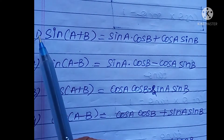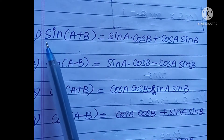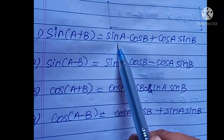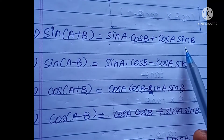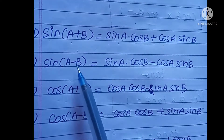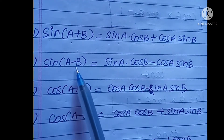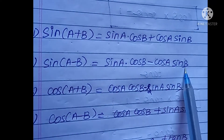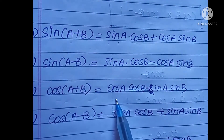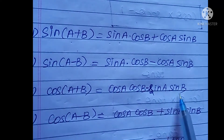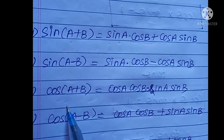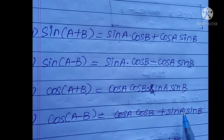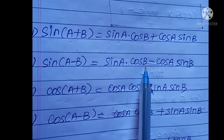Next, formulas important for exams: sin(A+B) = sinA cosB + cosA sinB. sin(A−B) = sinA cosB − cosA sinB. cos(A+B) = cosA cosB − sinA sinB. cos(A−B) = cosA cosB + sinA sinB.